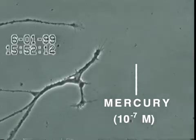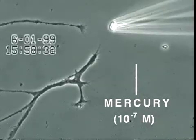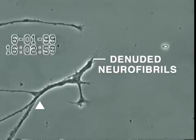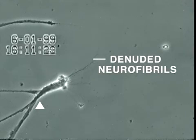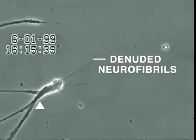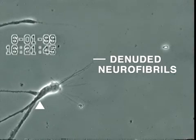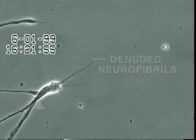Over the next 30 minutes, the neurite membrane underwent rapid degeneration, leaving behind the denuded neurofibrils seen here. In contrast, other heavy metals added at this same concentration, such as aluminum, lead, cadmium and manganese, did not produce this effect.